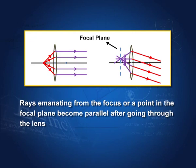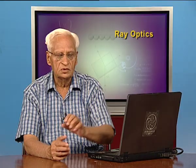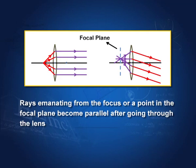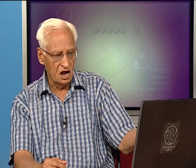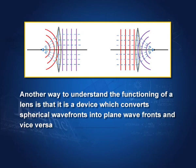Rays emanating from the focus become parallel to the axis after passing through the lens. Similarly, rays from a point in the focal plane become parallel to each other but not necessarily parallel to the axis. This is another way of understanding the functioning of a lens: spherical wave fronts from the focus become plane wave fronts after passing through the lens. Wave fronts will be studied in more detail later.